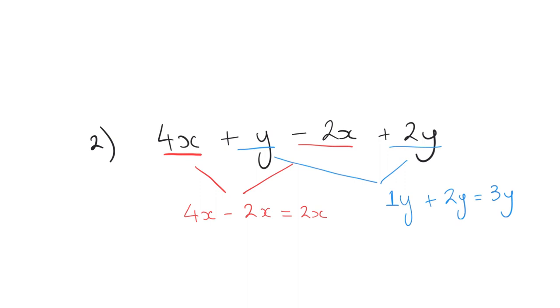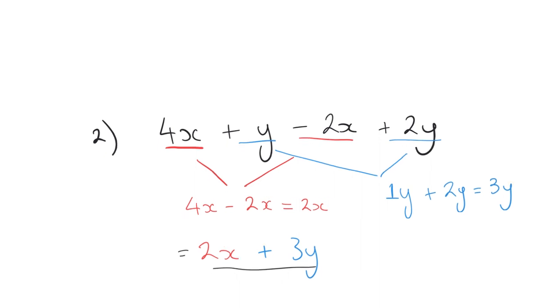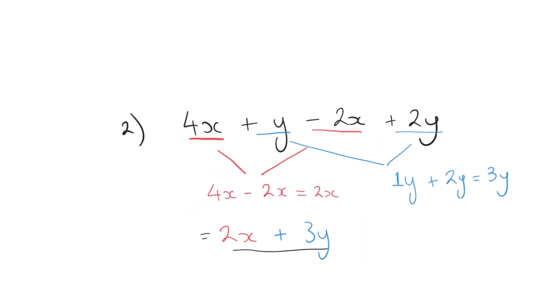So to write our answer, we combine them both. 2x plus 3y. Or you could write 3y plus 2x. It doesn't matter. Addition can be written either way around. And that is our answer to the question. I've just got one more.